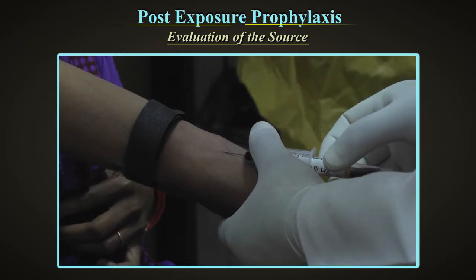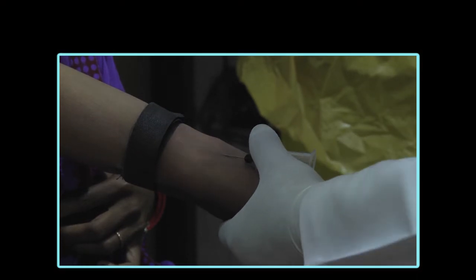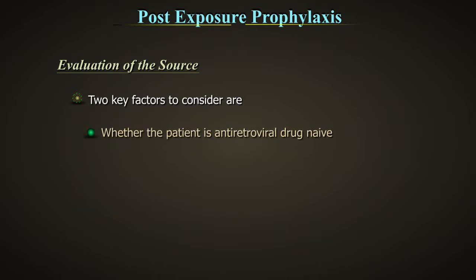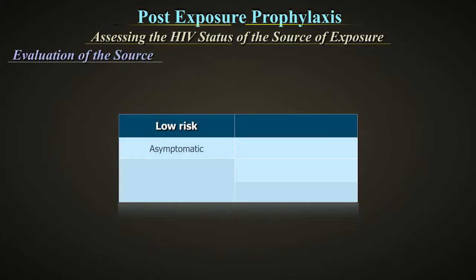Under no circumstances should the source patient be charged for the test. If the patient is known to be HIV positive, evaluation of risk is in order. Two key factors to consider are: whether the source is antiretroviral drug naïve, and whether the patient is on ARTs and likely to have a high viral load as determined by testing, if available, or by clinical signs and symptoms. Low risk: asymptomatic, or viral load less than 400 copies per ml.